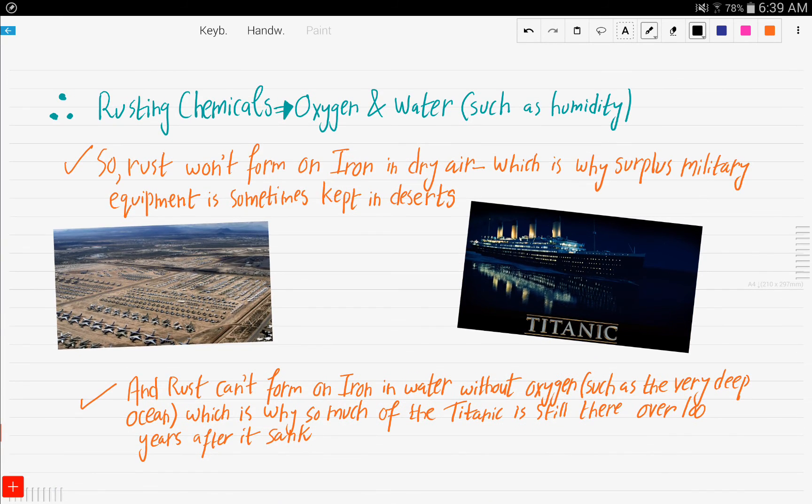The rusting chemicals are oxygen and water. It doesn't have to be liquid water, not necessarily. It could be humidity in air. Rust won't form on iron in dry air because it needs water or humidity. Which is why surplus military equipment is sometimes kept in deserts. Because deserts are so dry, they sometimes take airplanes and heavy metallic equipment of the military and store it in the desert because it would greatly reduce the probability of these metallic and iron equipment to rust.